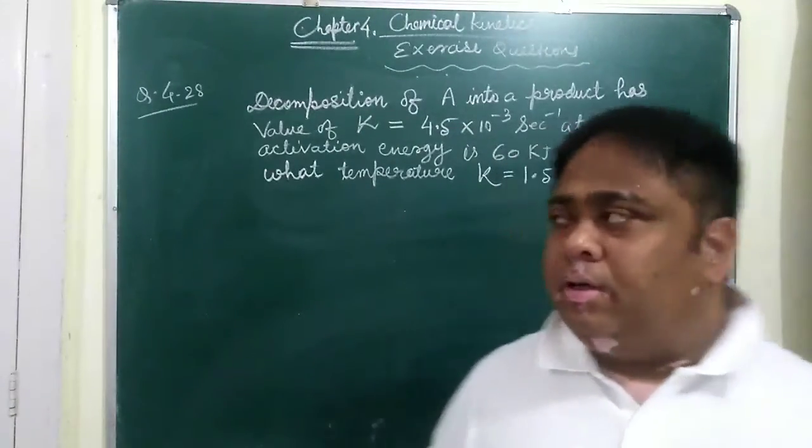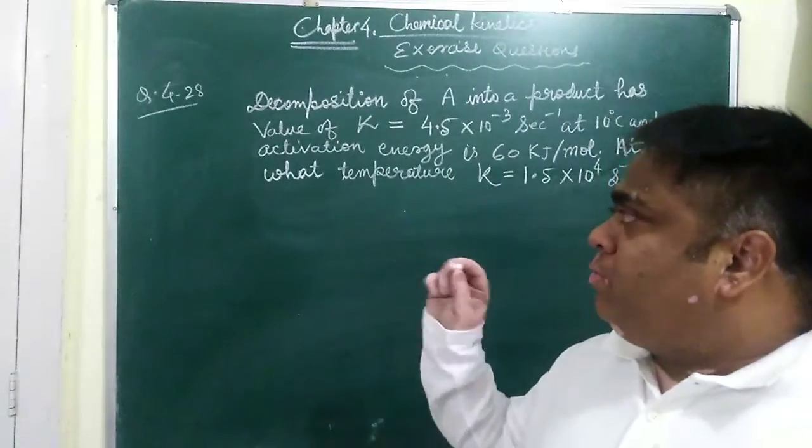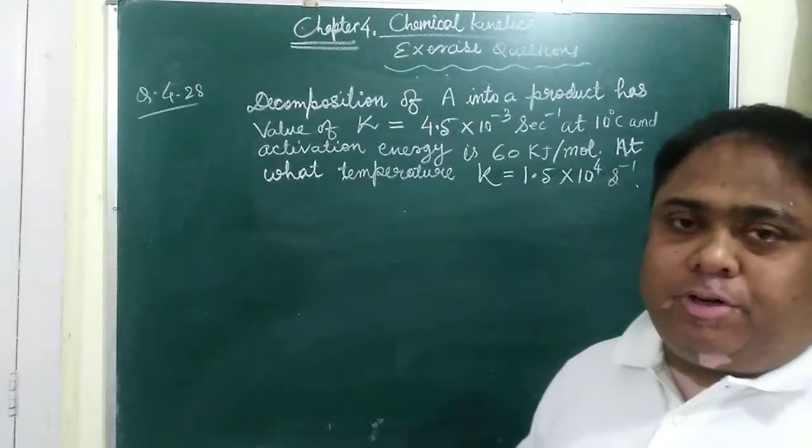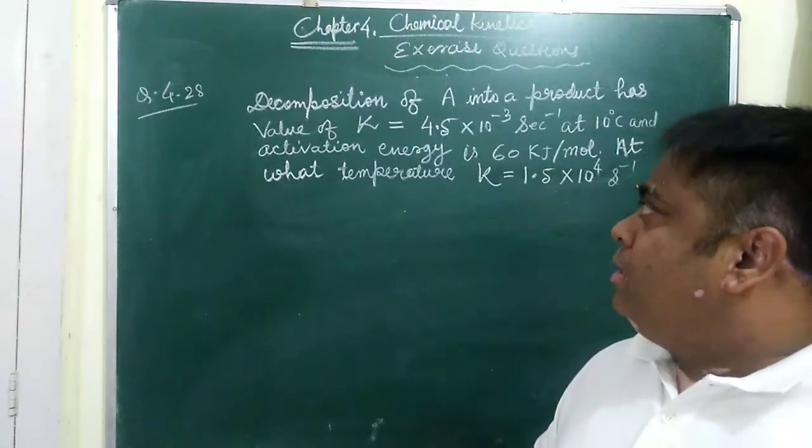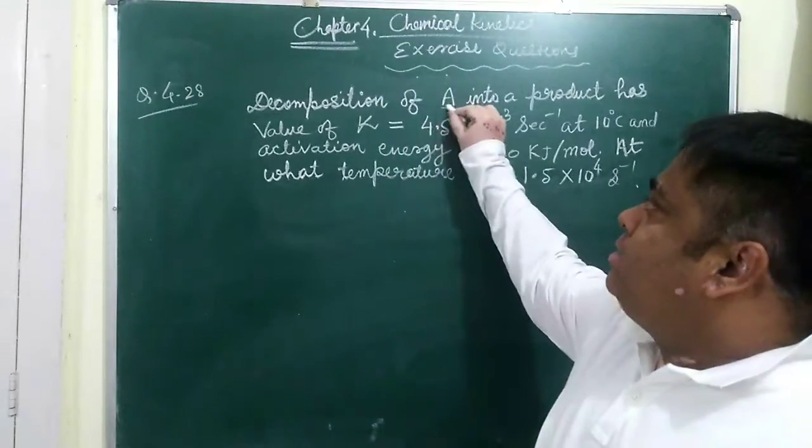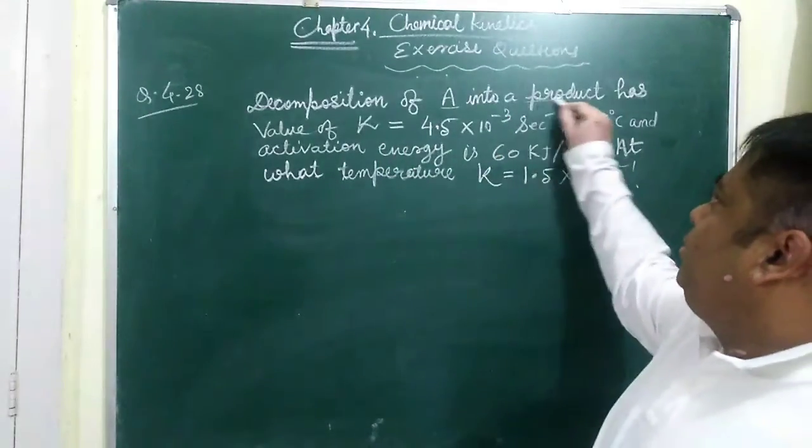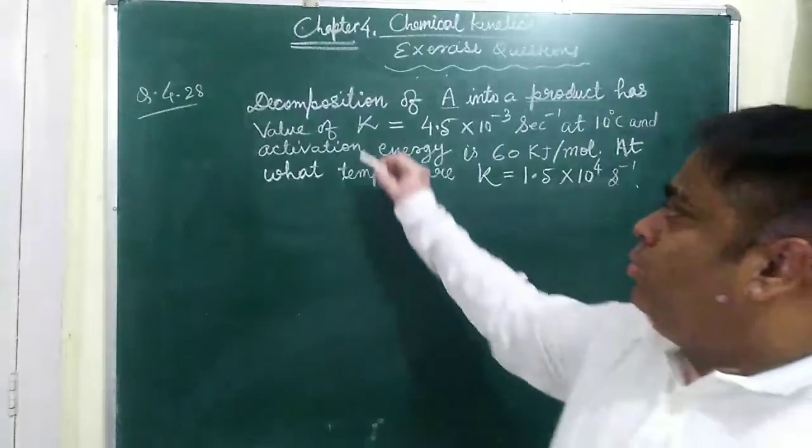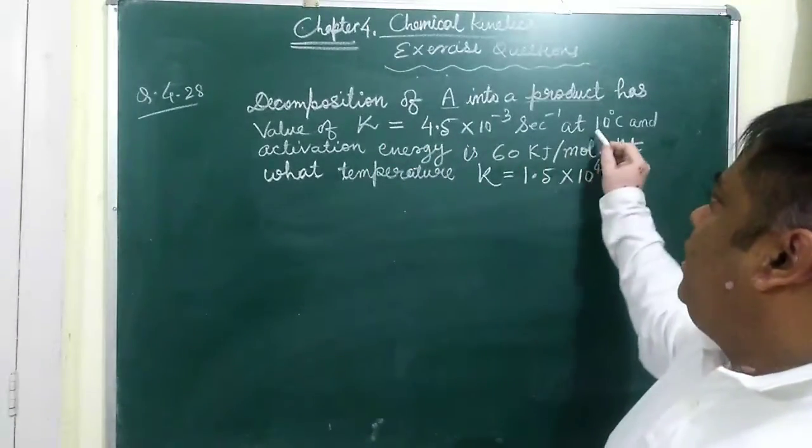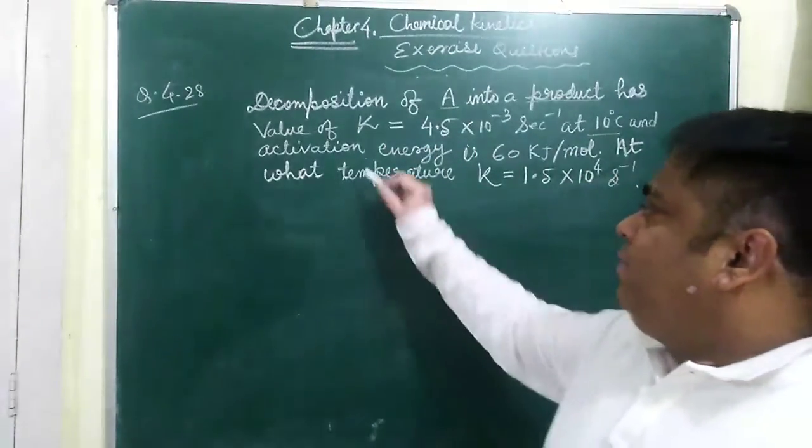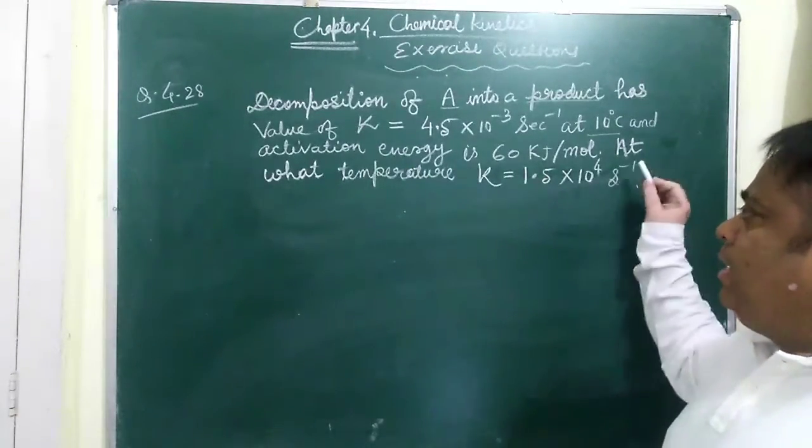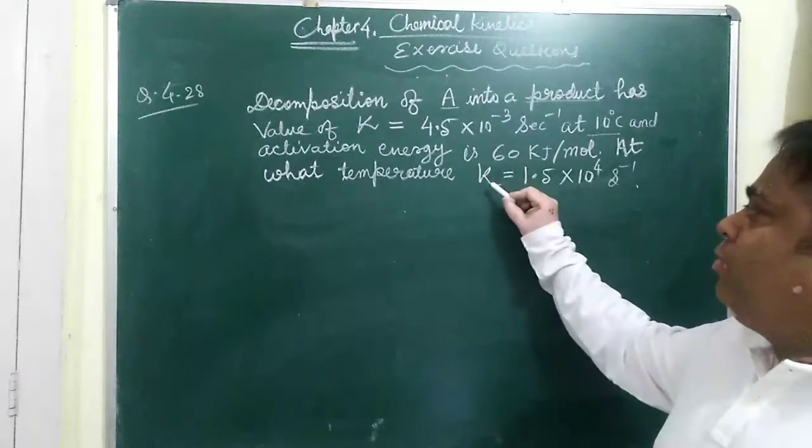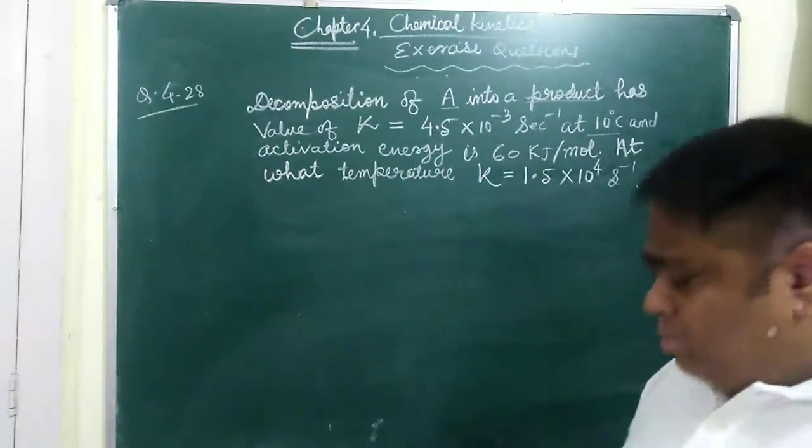Good morning students. So we will solve question number 4.28 of NCERT chapter 4 chemical kinetics. The question statement is decomposition of A into product P has a rate constant K equal to this much at 10 degree C. Activation energy is given 60 kilojoule per mole. Now they are asking at what temperature the value of K will become this much, that means two values of K is given.